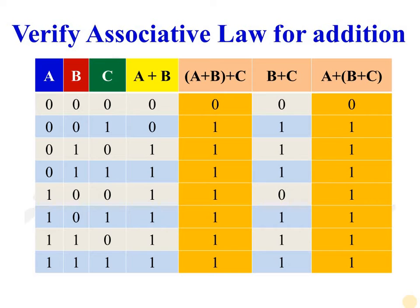This is a truth table with three variables A, B, and C. Various possible values range from 0 0 0 to 1 1 1. If we compare the fourth and sixth columns, we will find that the entries for all input combinations are the same — that means these two columns represent the same operation. So we can write A OR (B OR C) is equal to (A OR B) OR C.